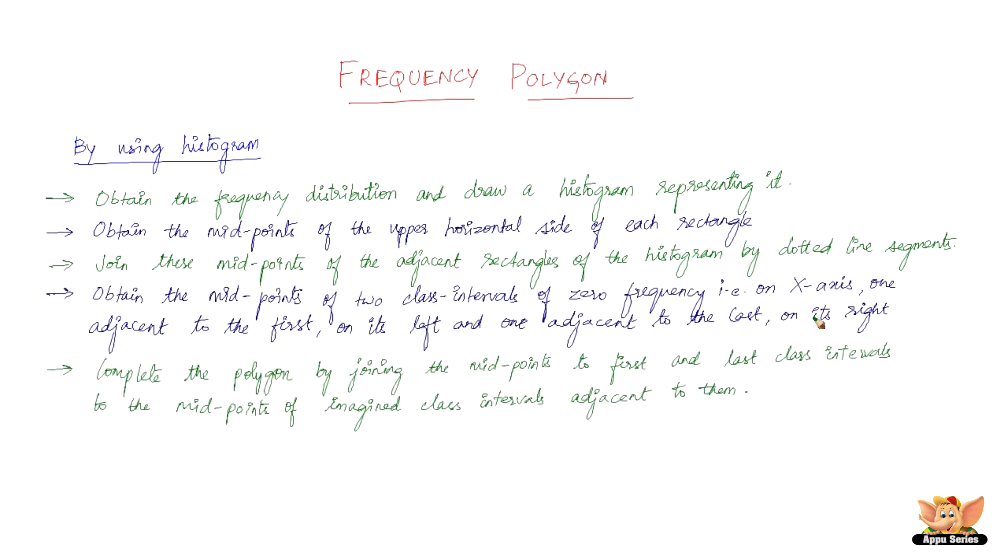The last and final point, which is an extension of the fourth point: complete the polygon by joining the midpoints of the first and last class intervals to the midpoints of imagined class intervals adjacent to them. This completes the steps to construct a frequency polygon by using a histogram. In the forthcoming video, let us illustrate these steps.